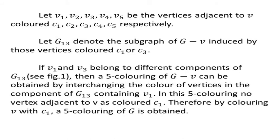Let V1, V2, V3, V4, V5 be the vertices adjacent to V, and let them be colored with colors C1, C2, C3, C4, and C5 respectively. Now let G13 denote the subgraph of G minus V — that is, the graph obtained by removing vertex V and all its incident edges — induced by those vertices colored with C1 or C3.